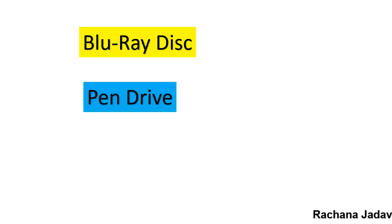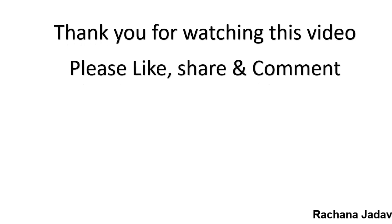Blu-ray Disc maintains HD quality. DVD storage capacity is 4.7 GB, and if it is on both sides, 17 GB. Blu-ray Disc holds 25 GB, and if it is on both sides then 50 GB — so it has more storage capacity than DVD. Next is the pen drive, also known as flash drive or removable disk. Currently pen drives can store up to 2 TB of data. It is also known as a USB device.